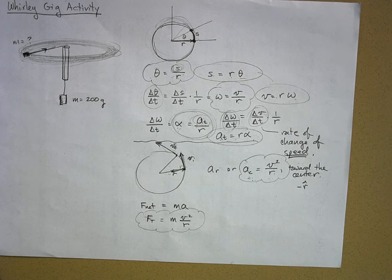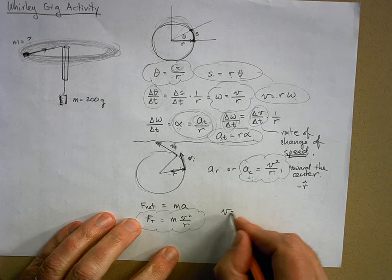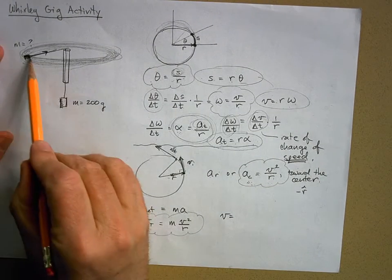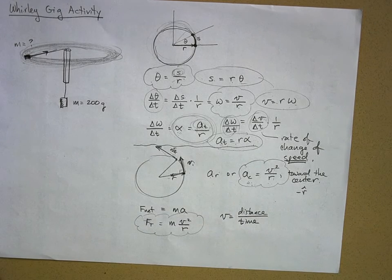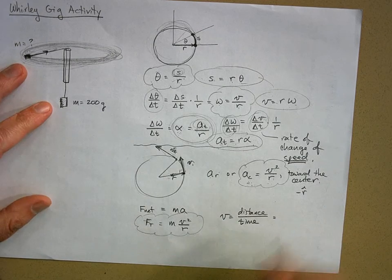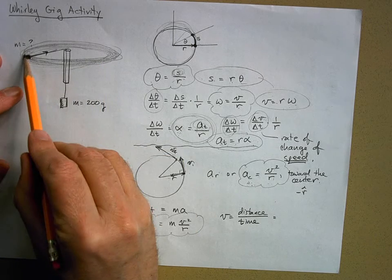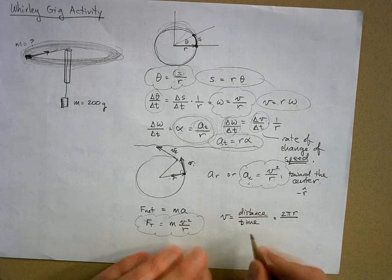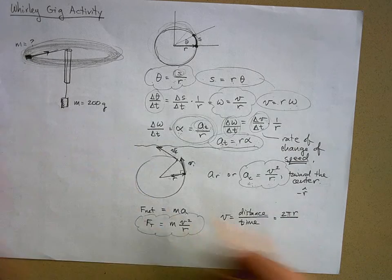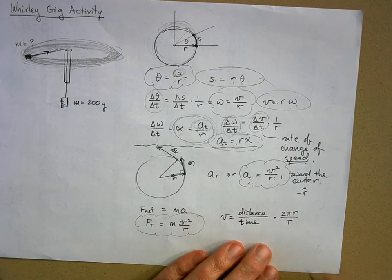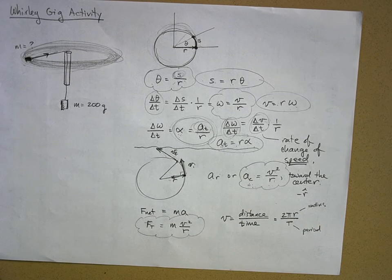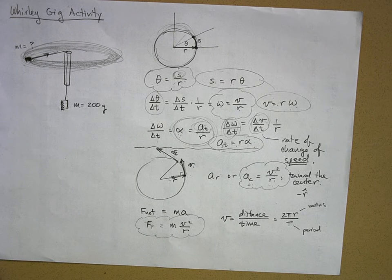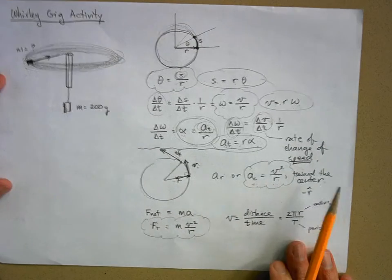The speed v can also be expressed as distance over time. For one complete circle, the distance is 2 pi r, and the time to go around once is the period T. So v equals 2 pi r over T. The period is the time it takes to complete one full circle.